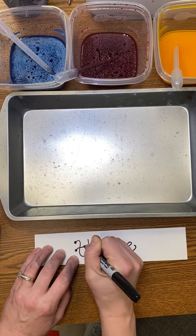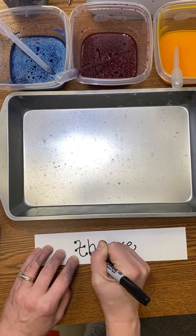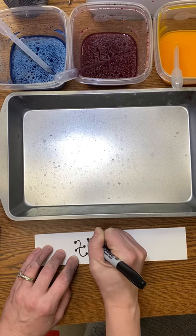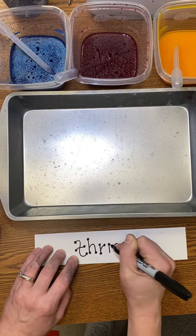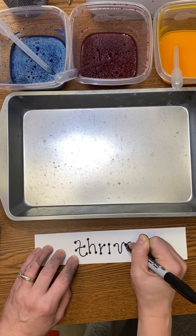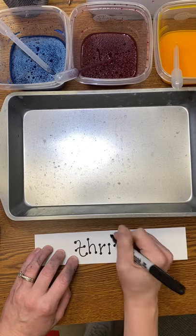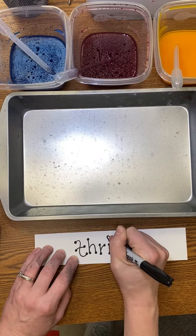If you want to put bubbles on there, bubble letters, cursive, block letters, uppercase, lowercase, whatever you choose to do. But decorate your word with the sharpie and you can do this while you're waiting for your turn to marble your paper.